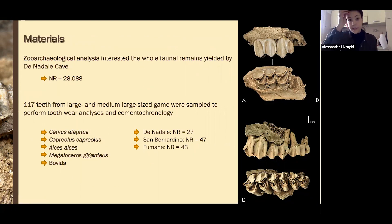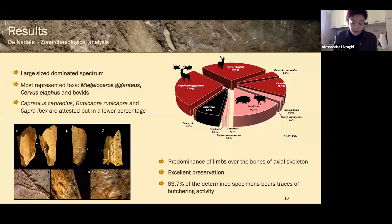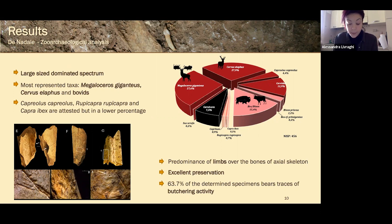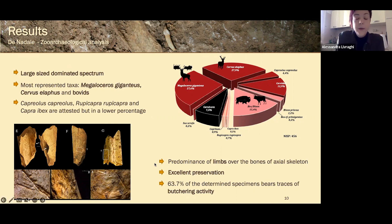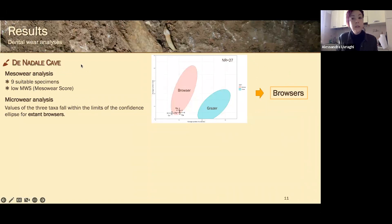The archaeological analysis concerned all the faunal remains at the Nadale cave, while I sampled 117 teeth from large and medium-large size game for the dental wear and cementochronology analyses. The main results at Nadale cave show a large presence of large-sized game with the predominance of giant deer, red deer, and bovids. Preservation is astonishing — materials are very well preserved with a very high rate of butchering traces that testify to the presence of the complete butchering sequence at the site.